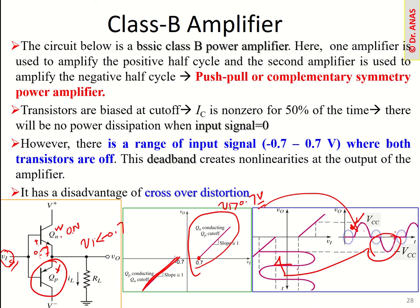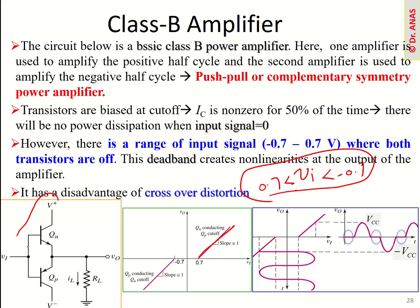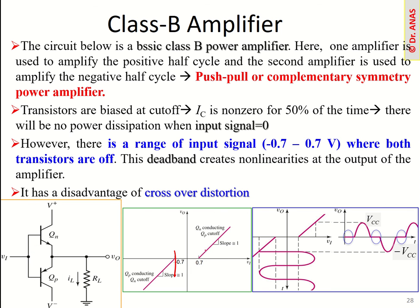If we notice what is actually happening: this complementary pair will work only when the input voltage is greater than +0.7V or less than −0.7V. Within the range of −0.7V to +0.7V, both transistors are off so there is no output voltage — we get zero transfer function. This region between −0.7V and +0.7V is called the dead region.